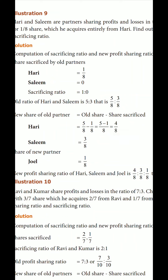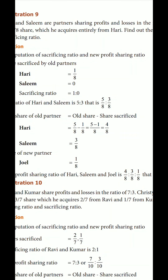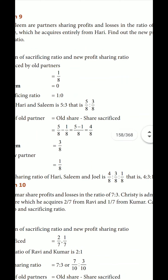Salim's new share: 3/8 minus 0 equals 3/8. Wait — Salim's new share is 2/8. Joel's share is 1/8. So 4 plus 3 plus 1 equals 8. The new profit sharing ratio is 4/8 : 3/8 : 1/8, that is 4 : 3 : 1.